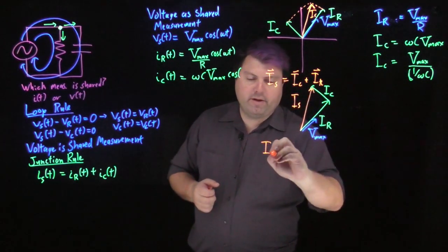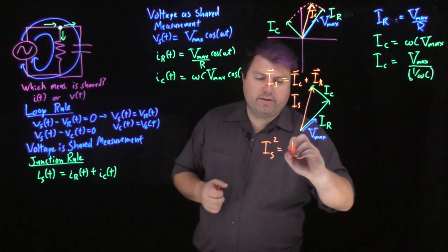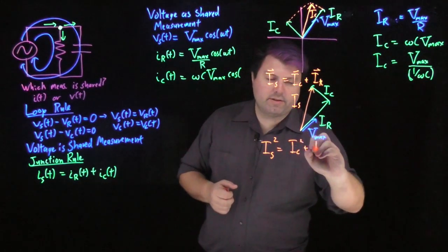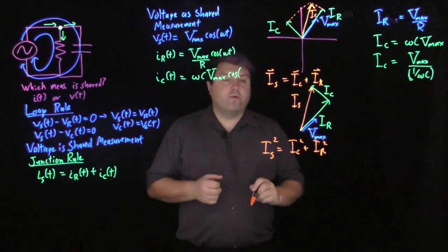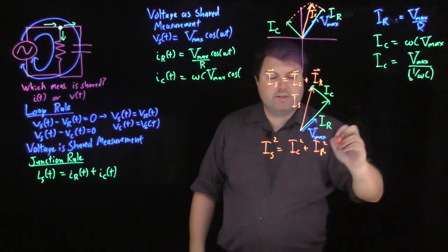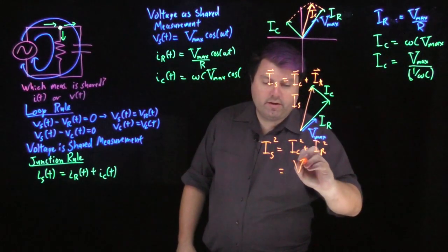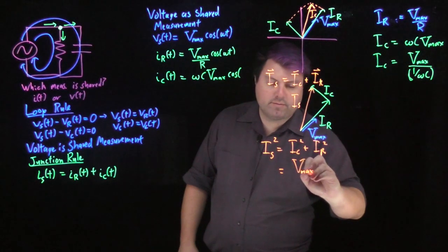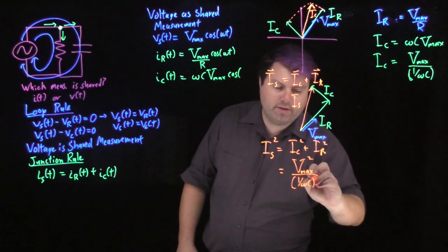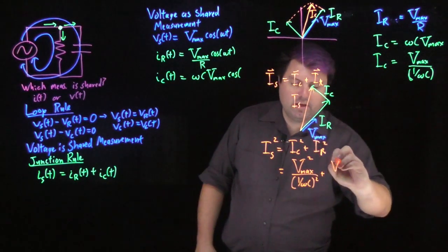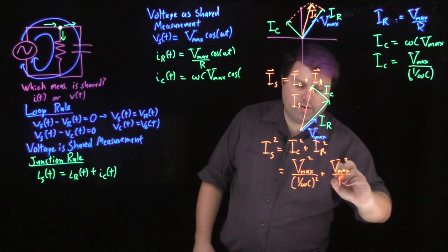And so we have that. We have Pythagorean theorem again. I sub s squared is equal to I sub c squared plus I sub r squared for our maximum value. So I sub c is v max quantity squared over this one divided by omega c quantity squared. I sub r is v max quantity squared over r squared.